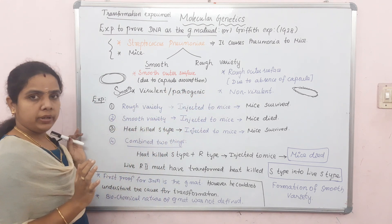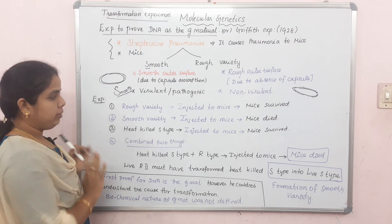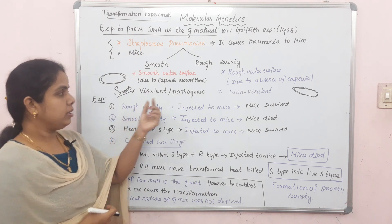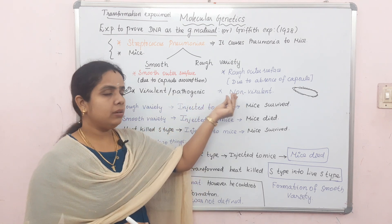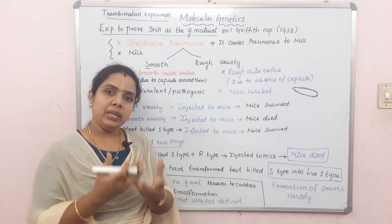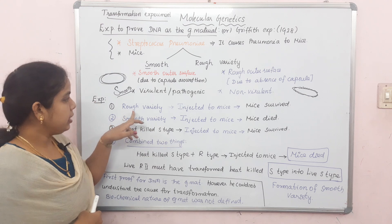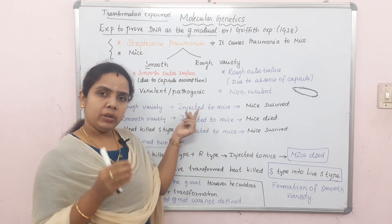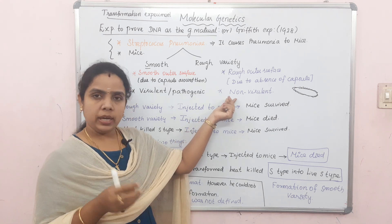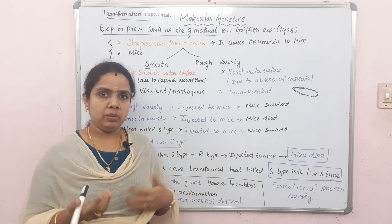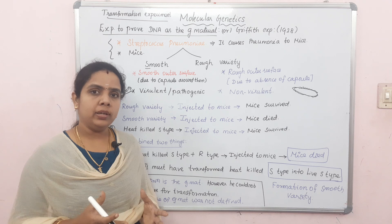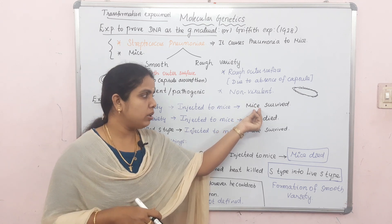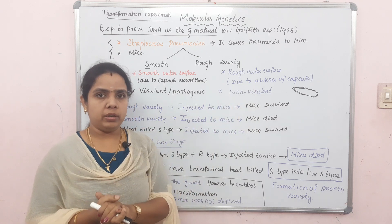The experiments are conducted one by one using two varieties. In the first experiment, Griffith injected the rough variety — R-type — of Streptococcus pneumoniae into mice. Since the rough variety is non-virulent, it does not cause any pneumonia to the mice. Therefore, the mice survived in the first experiment.